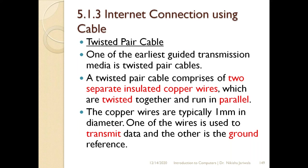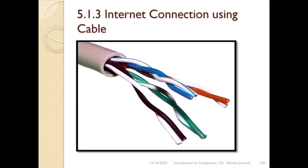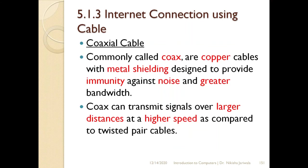In twisted pair cable, there are two copper wires. One transmits data and the other works as ground reference, where extra signals pass directly to earth. The two wires run parallel but in a twisted manner. The two copper wires do not connect or interfere with each other because the copper wires are coated with plastic insulating material, keeping them insulated from one another.